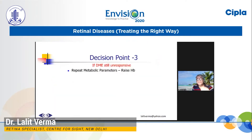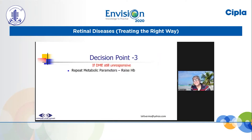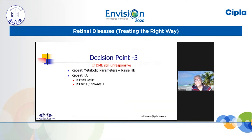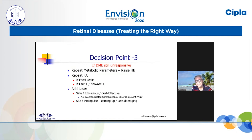Decision-making point number three: if still unresponsive, I repeat metabolic parameters and try to raise hemoglobin from, say, nine to eleven — it does make a difference. Repeat FA: if you see laserable leaks in the macula, laser them. If you see CNP areas in the periphery or neovascularization, take care of those areas. Laser is one treatment which can decrease the number of injections because the anti-VEGF load decreases, and sometimes treatment may become finite.